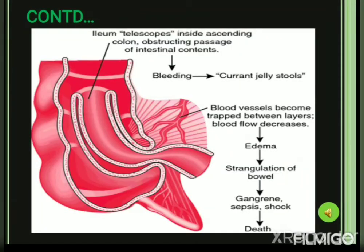This picture shows the telescoping of the ileum inside the ascending colon, which obstructs passage of intestinal contents, leading to bleeding and passage of red currant jelly stools. Since the blood vessels are trapped between the layers of the intestines, blood flow decreases, leading to edema and strangulation of the bowel, which may further lead to gangrene, sepsis, and shock — a fatal condition that can lead to death.